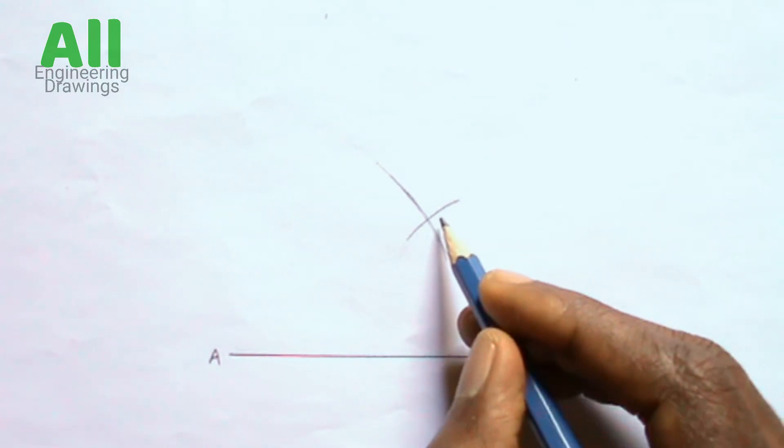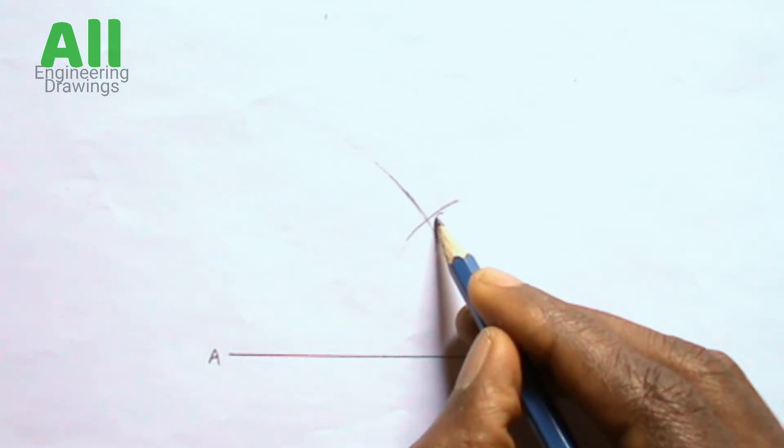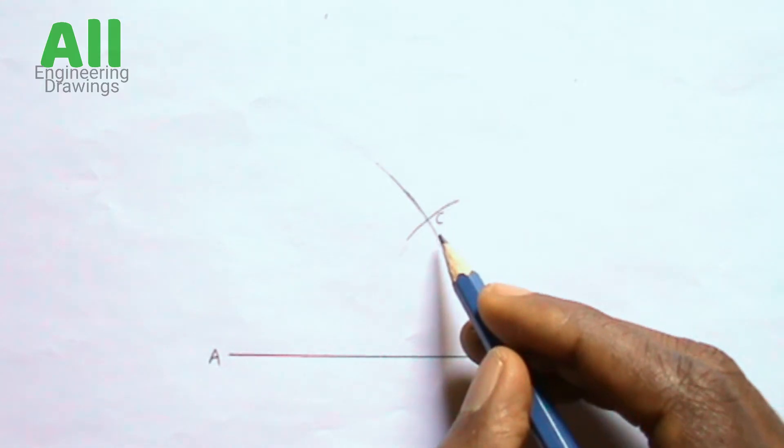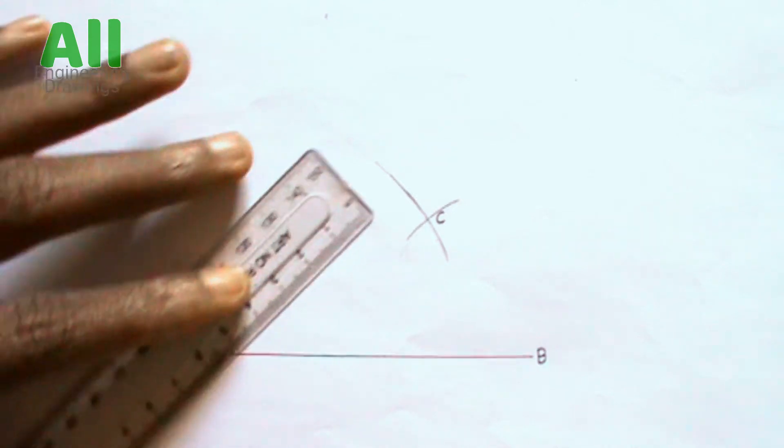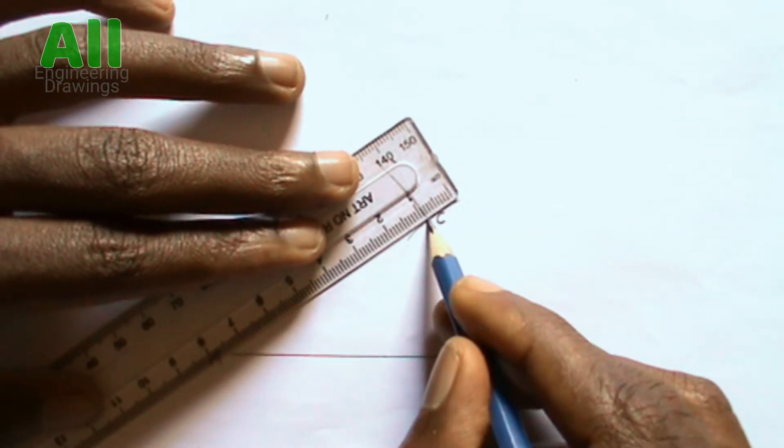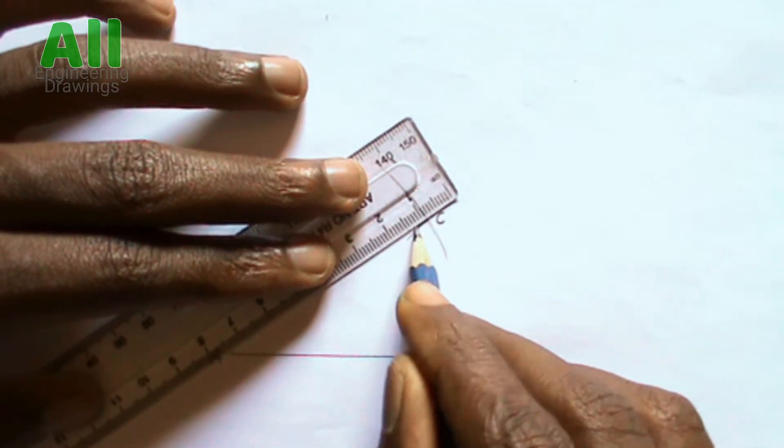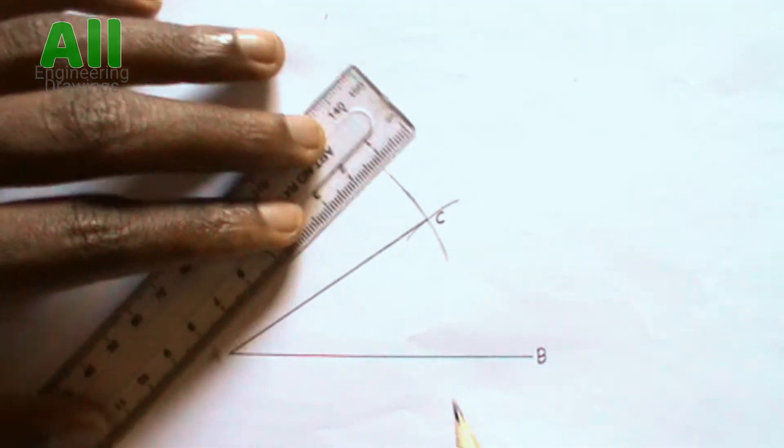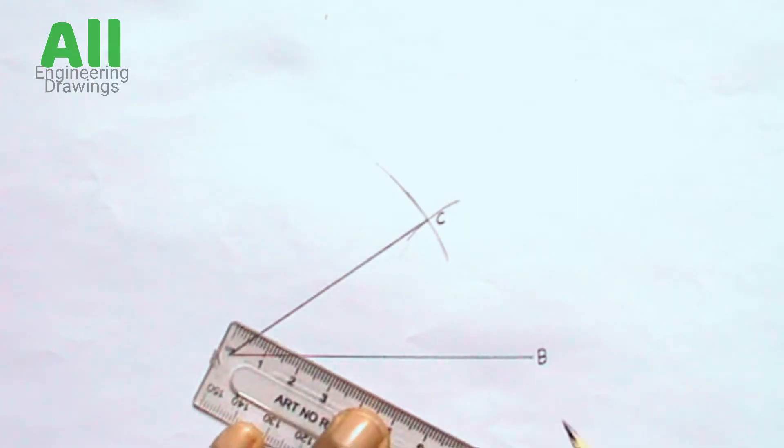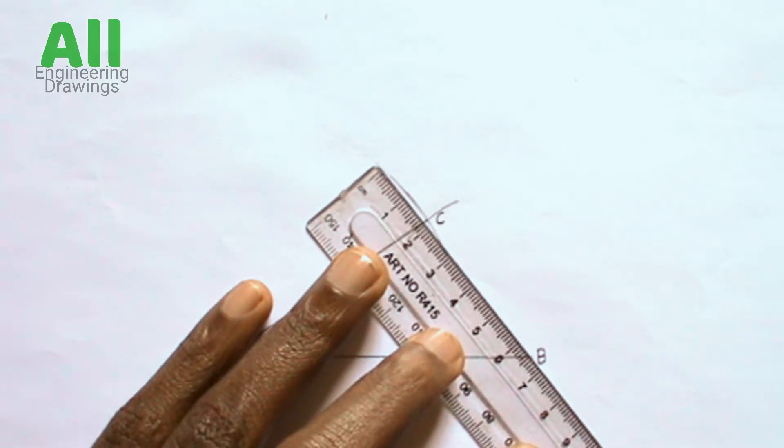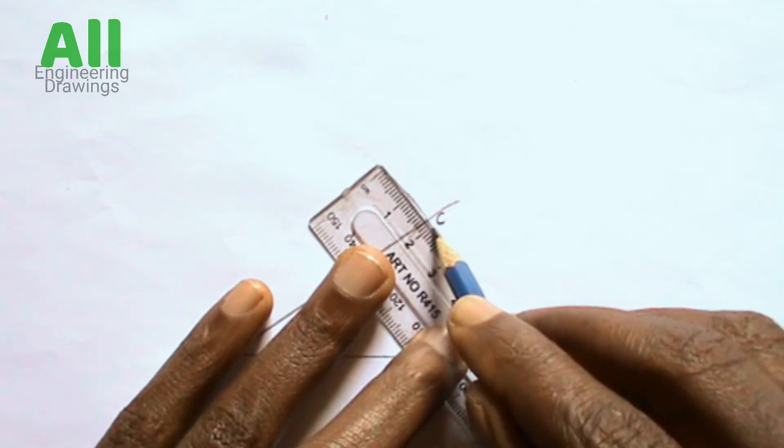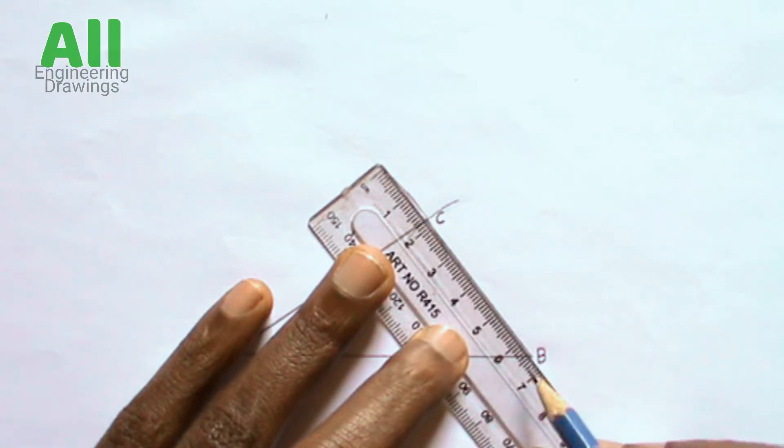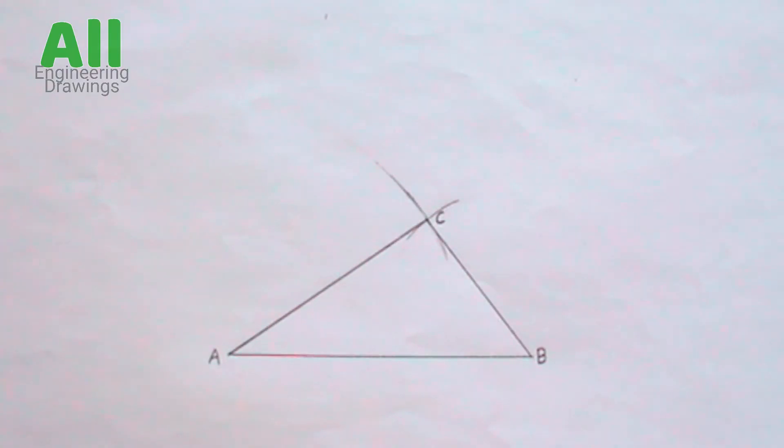Label the point where the arcs intersect. Now draw a line joining point A and point C. Also draw a line joining point B and point C. Triangle ABC has been drawn successfully.